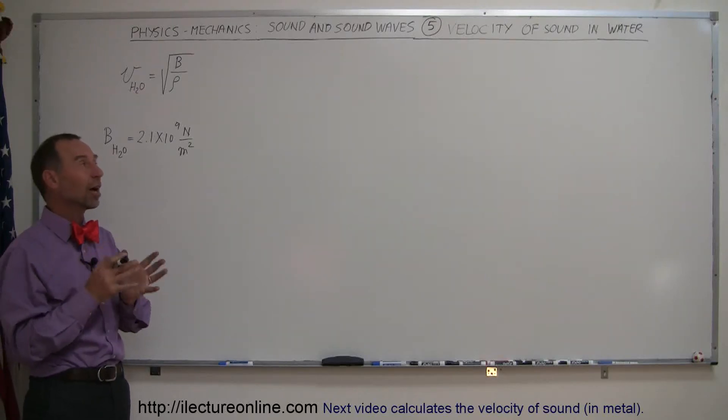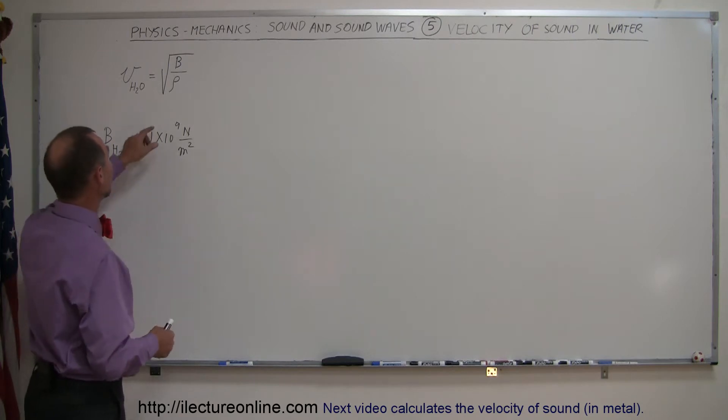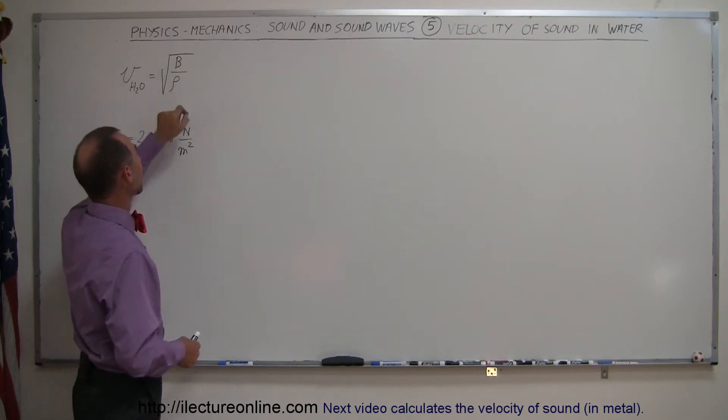Here we're going to look at how to find the velocity of sound in water. Again, the equation is the same as in air: it's equal to the square root of the bulk modulus divided by the density.